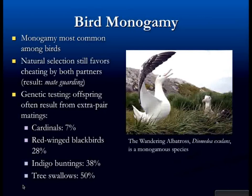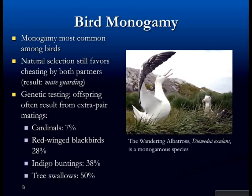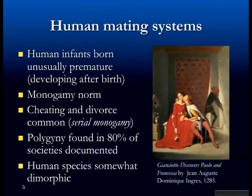Monogamous species usually practice serial monogamy — a series of relationships with different individuals lasting for a period of time. Humans actually fit this pattern. Humans don't typically stick with one mate throughout their lifetime. Sometimes your society tells you that's the ideal, but the reality is that most people go through a series of mates. Divorce is actually the norm — most people get divorced in our society.